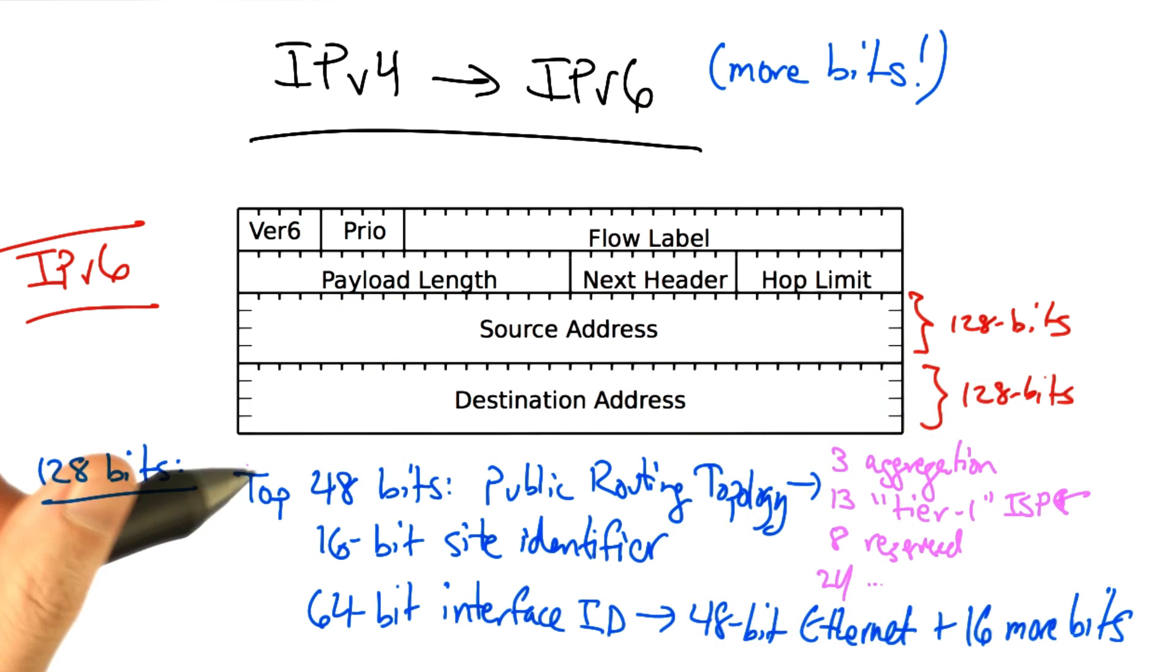Now note that there are 13 bits in the top 48 that directly map to the tier 1 ISP, meaning that addresses are purely provider-based. Thus, changing ISPs would require renumbering.